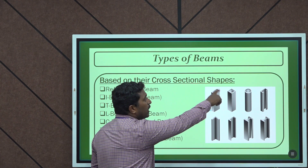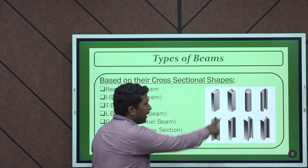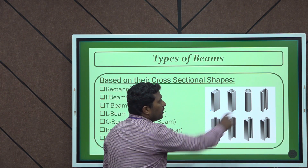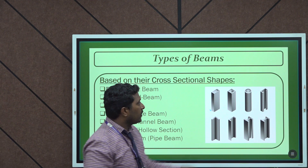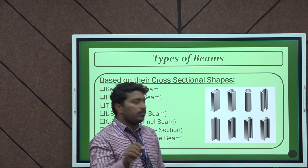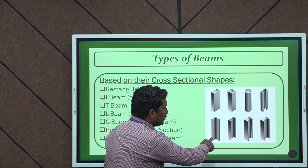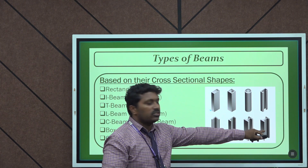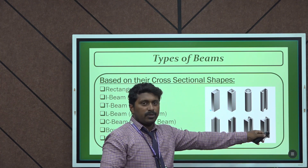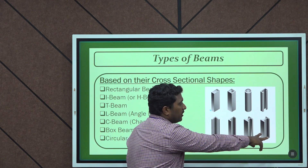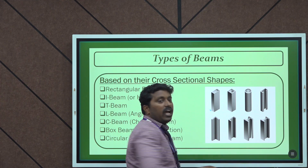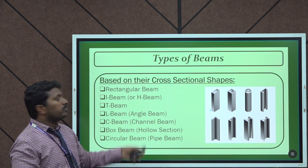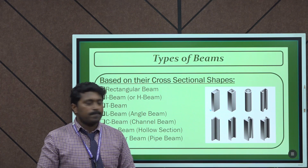From the diagram: the first is a rectangular type of beam, the second is a square type of beam, the third is a circular beam or pipe, the fourth is a C-section beam, next is an L-section beam, then the I-section beam, and the last one is the H-section beam. Both the I-section and H-section look very similar. These are the different types of beams based on their cross-sectional area.